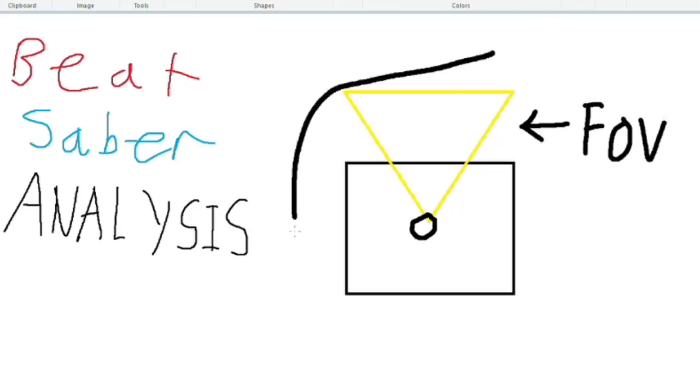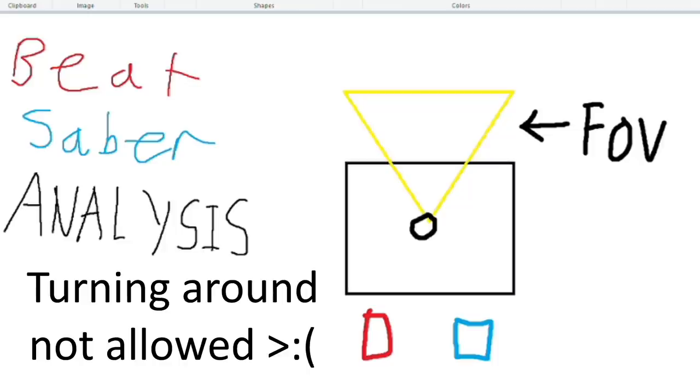Using the Beat Saber 360 mode, you are able to spawn any block from any direction. What this genius mapper did is spawn blocks in front of you, then later in the song, the blocks spawn behind the player. But the idea behind this song is for you to memorize the patterns, and you'll see exactly what I mean.